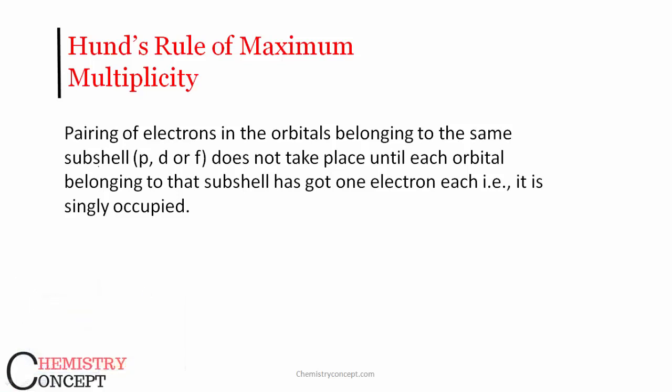This rule states that pairing of electrons in the orbitals belonging to the same subshell does not take place until each orbital belonging to that subshell has got one electron each, that is, it is singly occupied.